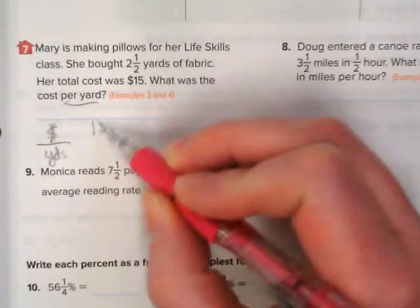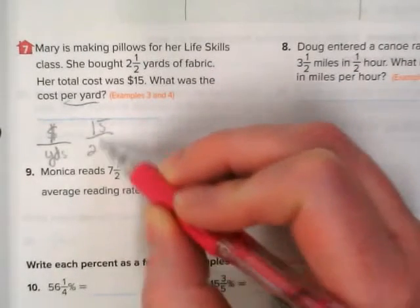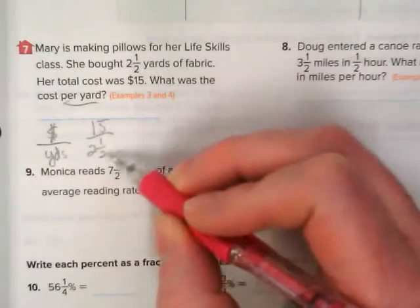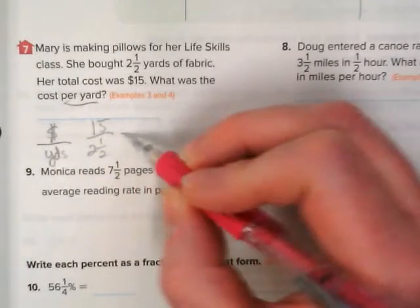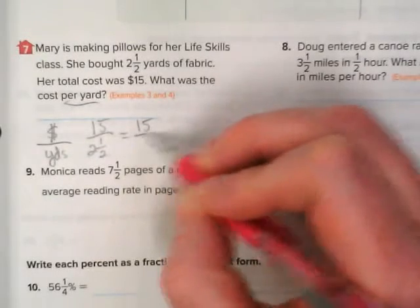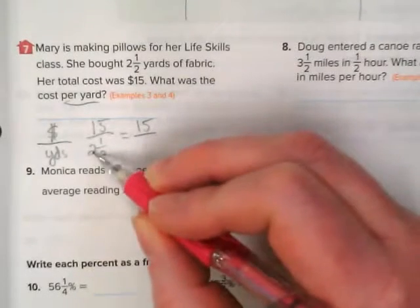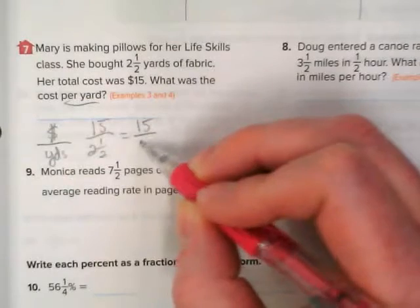So we have 15 divided by two and a half. Before we can do anything with this, we have to change this into an improper fraction. So 15 is going to stay over 1, and 2 times 2 plus 1 would be 5 over 2.